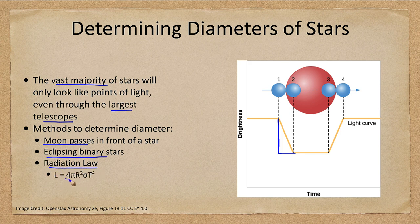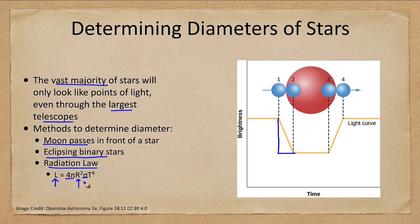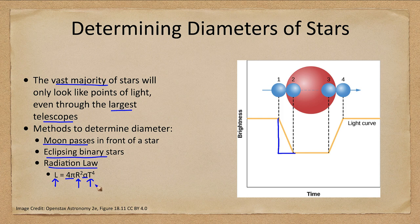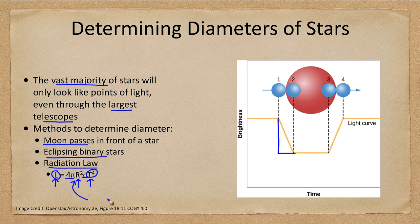The radiation law has a bunch of constants here. 4 pi and sigma are just constants. So it relates the luminosity, the radius, and the temperature. Now if we can determine two of those then we can calculate the third. So if we can figure out the temperature and the luminosity we could then solve the equation and find what the radius would be. So that's another way that we can do it if we are able to determine the other two numbers.